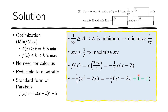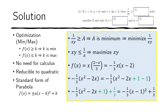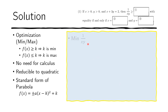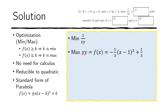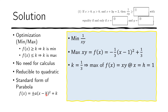After completing the square carefully, we get the expression: negative one third times (x minus 1) squared plus one third. We are looking for the maximum of xy, and since this is in standard form with a minus sign, k equals one third is the maximum. This maximum occurs at x equals 1, which is the vertex of the parabola. Since k is the maximum of xy, the reciprocal gives us the minimum of 1 over xy, which is 1 over k, equal to 3.